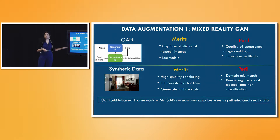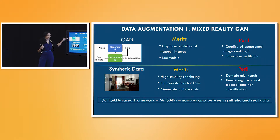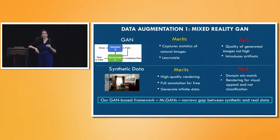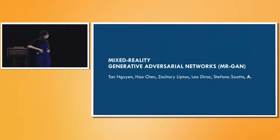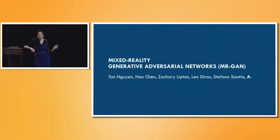In one of our works, we wanted to ask: can we combine both? The GAN framework tries to match distributions, but it's not able to completely do this well and introduces artifacts. On the other hand, if we start with the graphics renderer, we have a fairly realistic looking image — can we then hope to correct it? Can we push the distribution of synthetic images closer to the distribution of real ones and through this get better training data? We called this Mr. GAN, or Mixed Reality GANs, a project with intern Tan and collaborators Zach, Stefano, and others at Amazon AI.